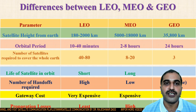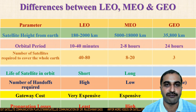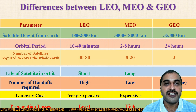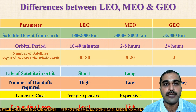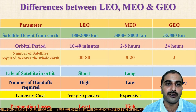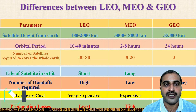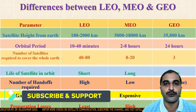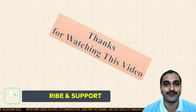This is all about the types of satellites on the basis of the height of the orbit from the surface of the earth. In the next video, we will see the types of satellites on the basis of their function — that is, active satellites and passive satellites. Thank you for watching this video.